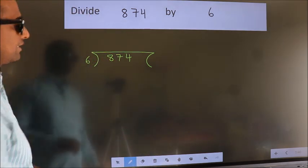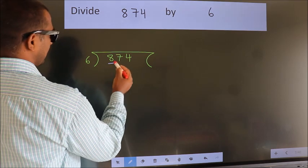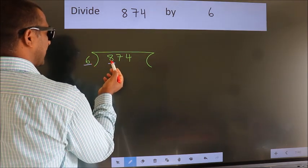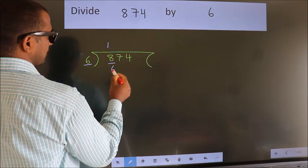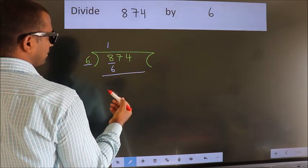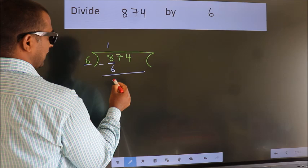Next, here we have 8, here 6. A number close to 8 in 6 table is 6 times 1 is 6. Now we should subtract, we get 2.